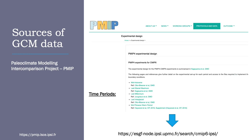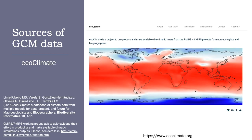PMIP efforts are part of the Coupled Model Intercomparison Project, currently in its sixth phase. Access to some model outputs can be gained through a data portal, but it will require some searching and processing to get variables in the typical format used for niche modeling. There have been efforts to make previous PMIP models easily accessible for ecological niche modeling — EcoClimate is one example, a project to pre-process and make available the climate layers from PMIP3.